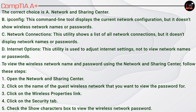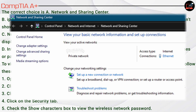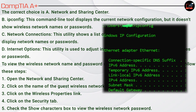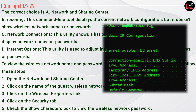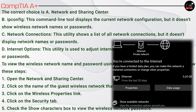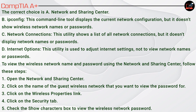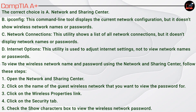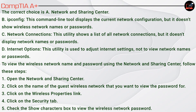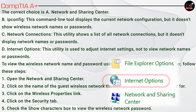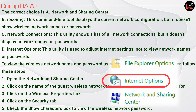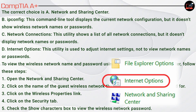The correct choice is A, Network and Sharing Center. B, ipconfig — this command line tool displays the current network configuration but doesn't show wireless network names or passwords. C, Network Connections — this utility shows a list of all network connections but doesn't display network names or passwords. D, Internet Options — this utility is used to adjust internet settings, not to view network names or passwords.